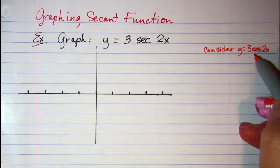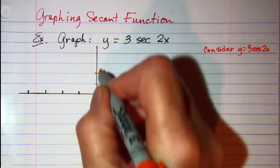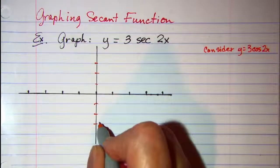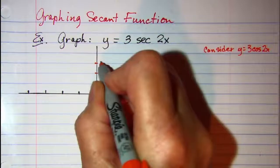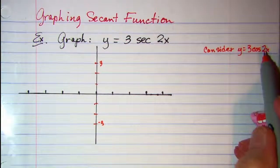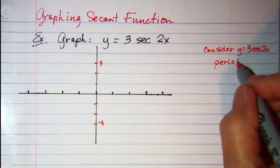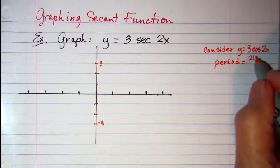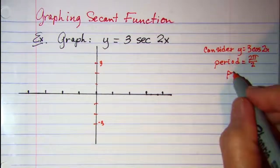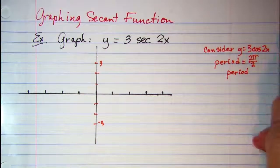So our cosine function has an amplitude of 3 and the b value indicates that the period is 2π over b which is 2. So my period for 3 cosine 2x is π.